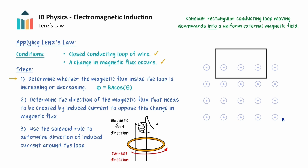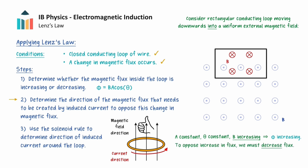Let's begin with step 1. The area of the loop remains constant, and the angle theta remains constant because the loop is not rotating during its motion. However, even though the magnetic field is uniform, the number of magnetic field lines cutting through the loop is increasing, so the magnetic flux out of the screen is increasing. In step 2, we need to oppose this increase in magnetic flux. We can do so by creating a magnetic field that points into the screen, which is in the direction opposite to the external magnetic field. This magnetic field will be produced by the induced current, and we will use step 3 to determine the direction of the induced current that will result in a field pointing into the screen. From the solenoid rule, and pointing our thumb towards the screen, we find that our fingers curl clockwise, which means that the induced current must move in a clockwise direction. So we have worked out that this current will oppose the increase in flux caused by moving the loop of wire towards the magnetic field.